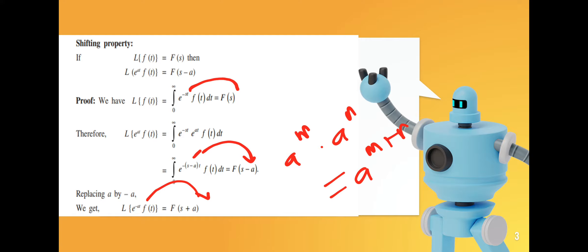For f(t) times e^(at): if you have plus a in the exponent, replace s with s minus a. If you have minus a in the exponent, replace s with s plus a. This is the shifting property.